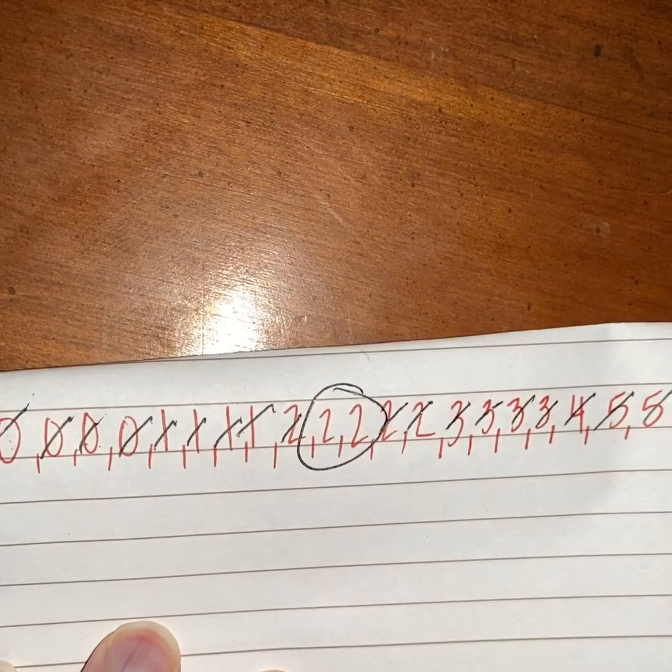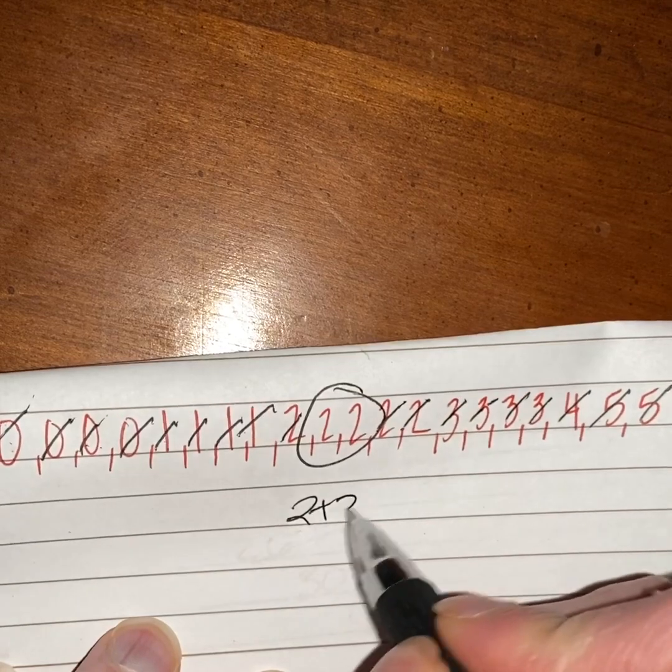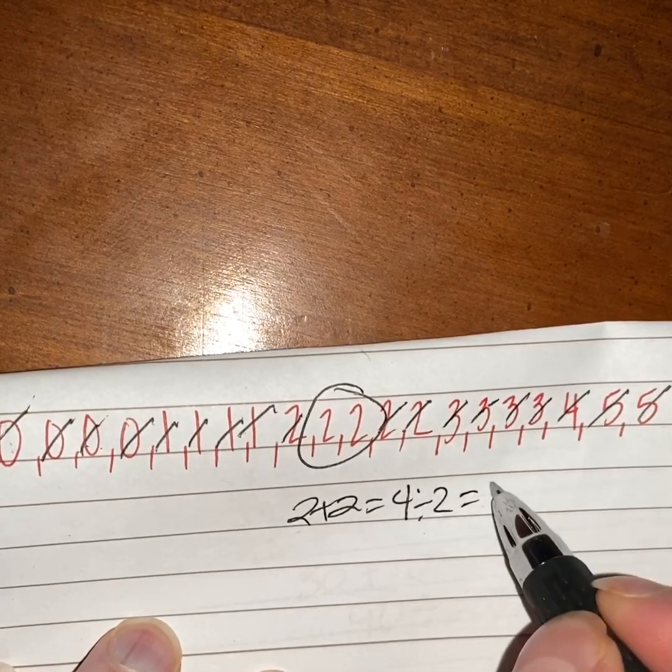That leaves two twos in the middle, so that means the median is two. If you wanted to, you could add both of those up—two plus two equals four, four divided by two—it's still going to equal a median of two.